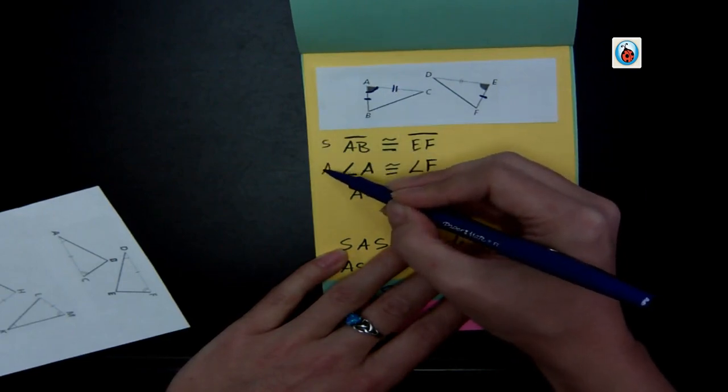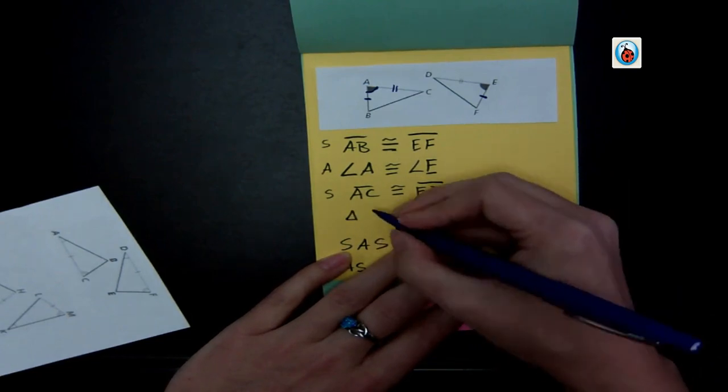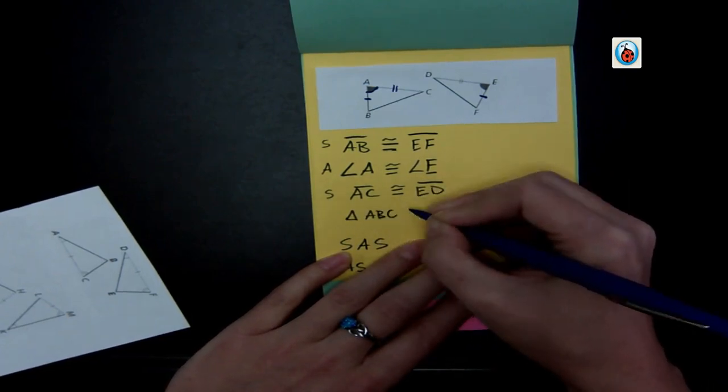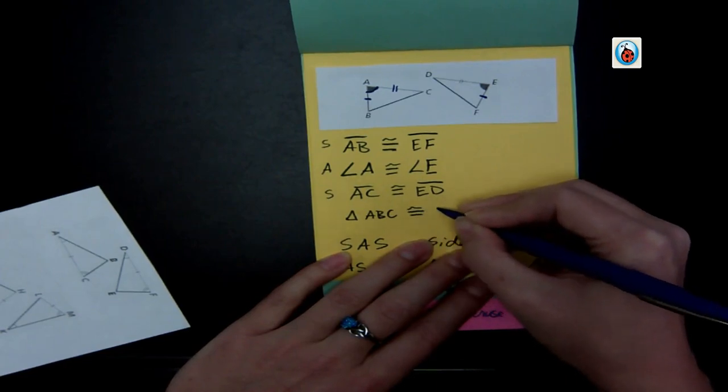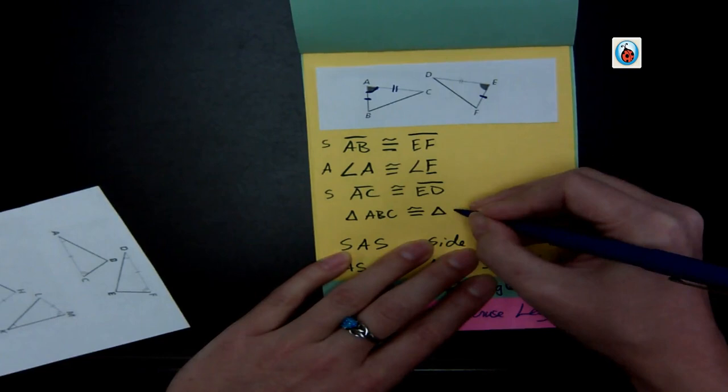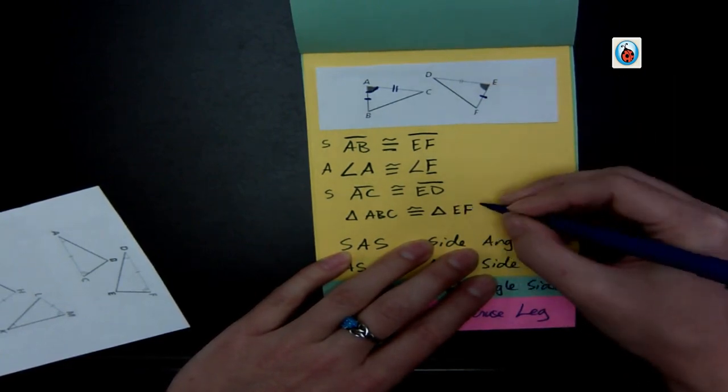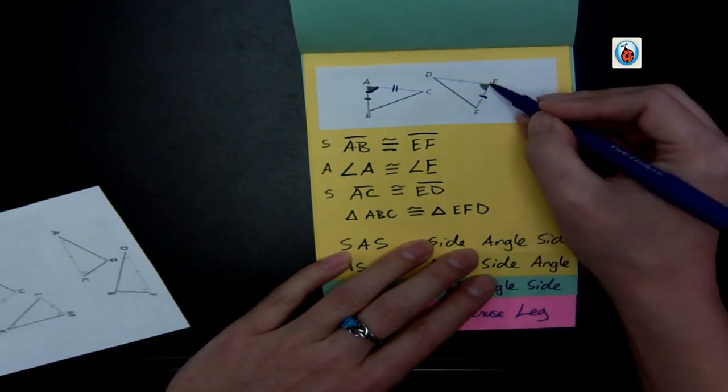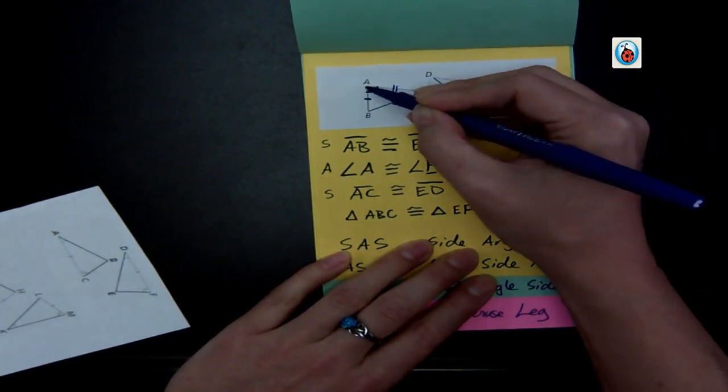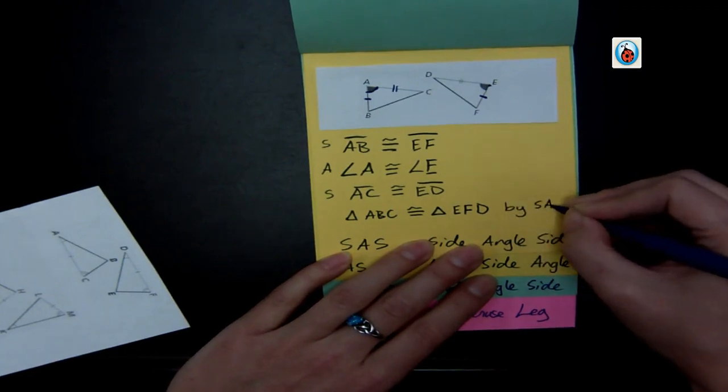So that's side, angle, side. So triangle ABC is congruent to triangle, and I look, since I started with A, I have to start with E. Follow down the one side, which is F, and then to the D. So I'm always making sure I go in the same order to match up every part. And that's congruent by side, angle, side.